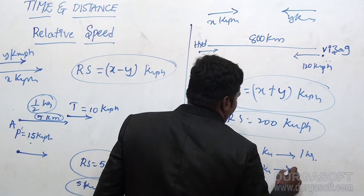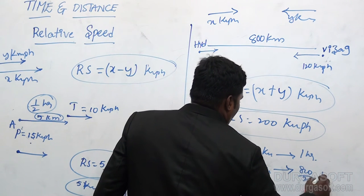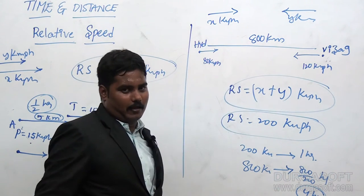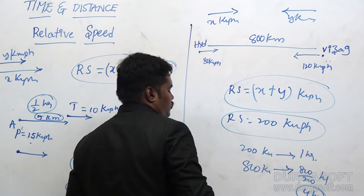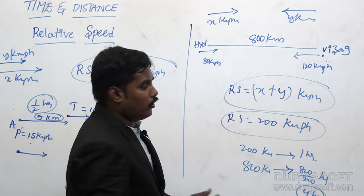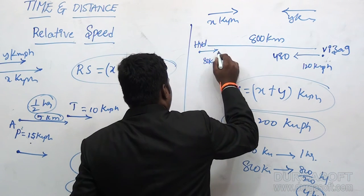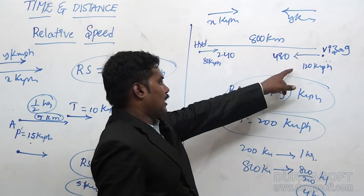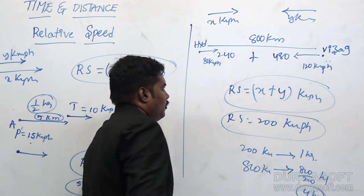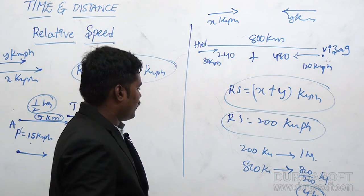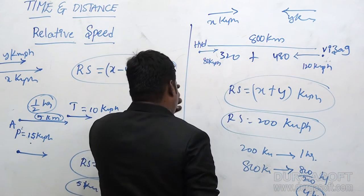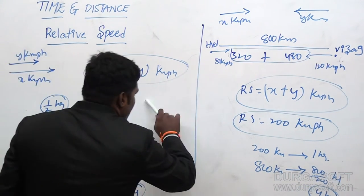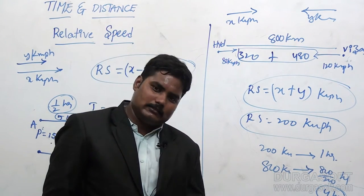800 km divided by 200 km/h gives 4 hours — they meet after 4 hours. After 4 hours: 4×80=320 km and 4×120=480 km; 320+480=800 km total. This relative speed concept is also used in trains, general time and distance, and circular track problems.